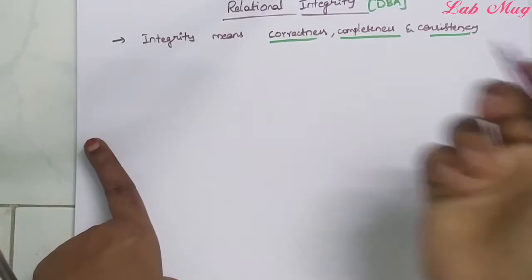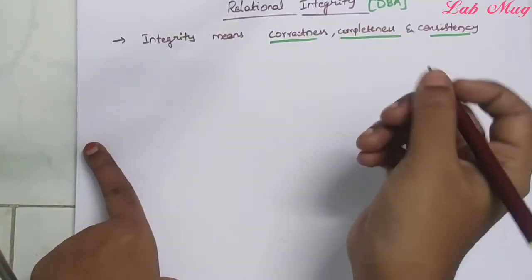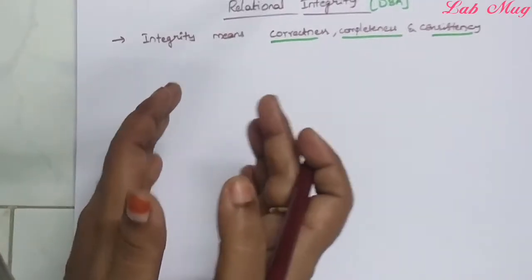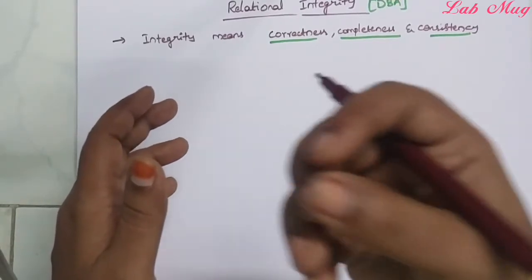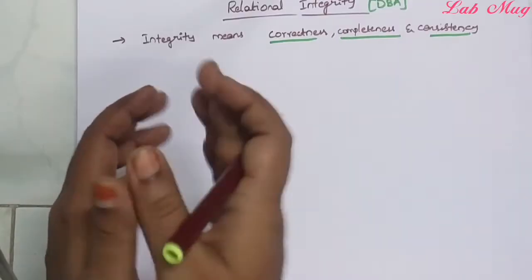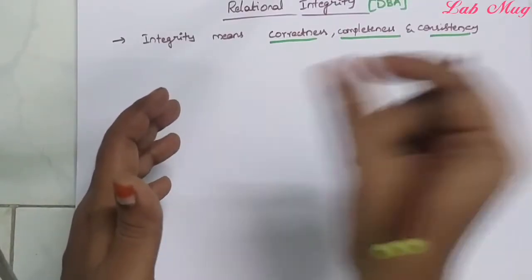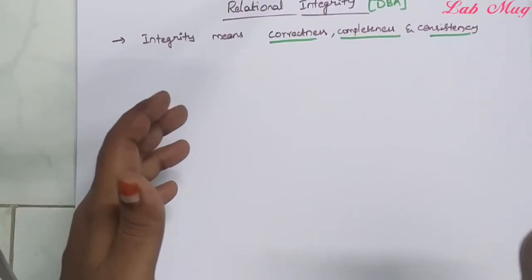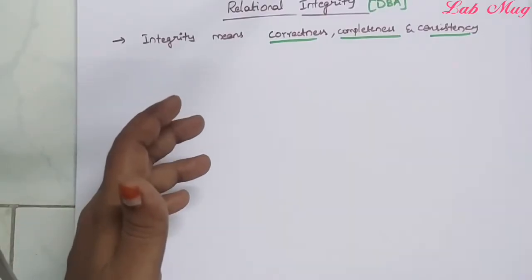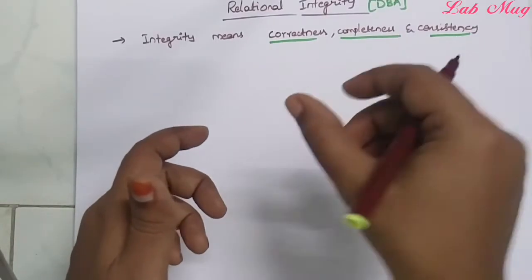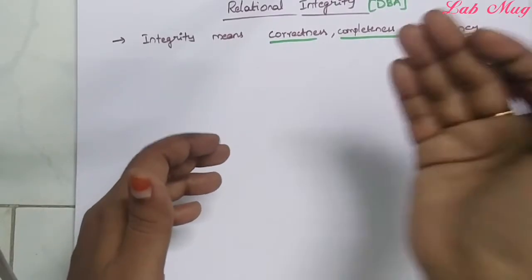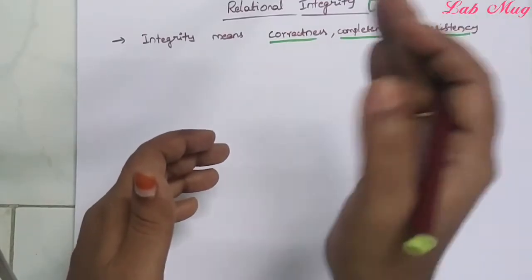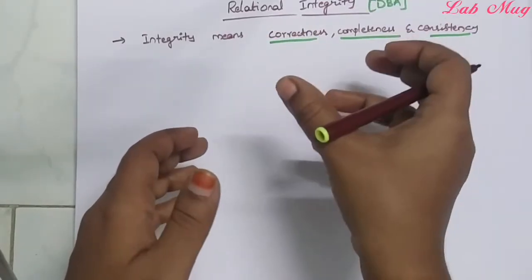The database administrator maintains all the total integrity concepts in the database. In the database, there are many members — employees, managers, team leaders, and different employees. But all persons are managed by the database administrator. The DBA plays a very important role in maintaining the database.